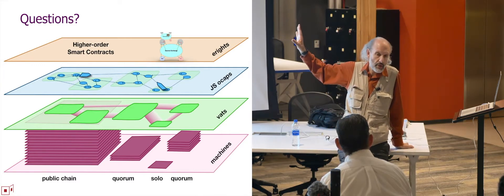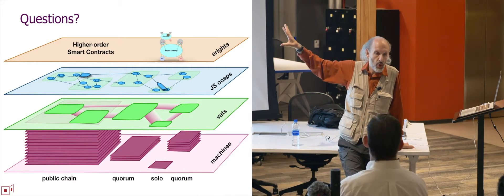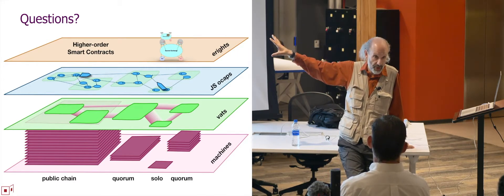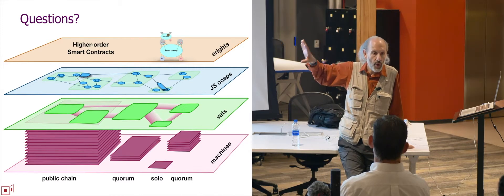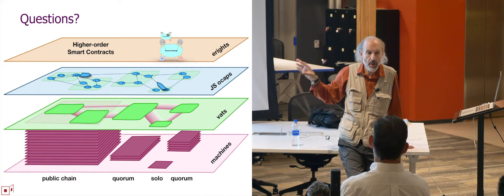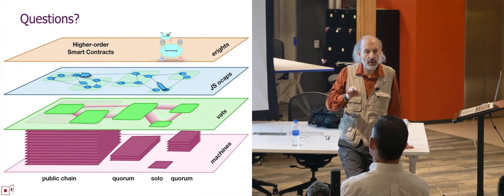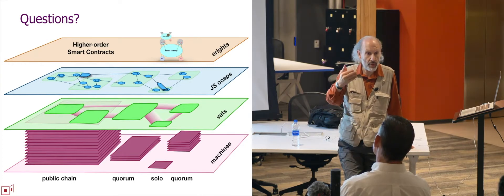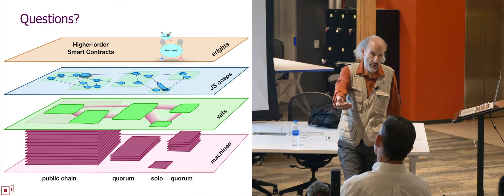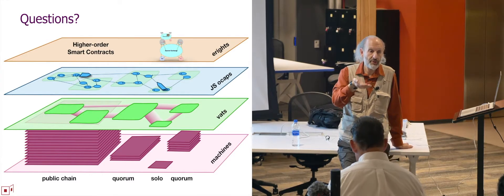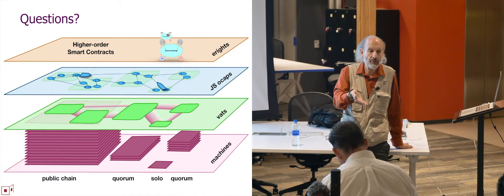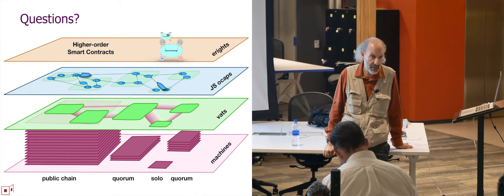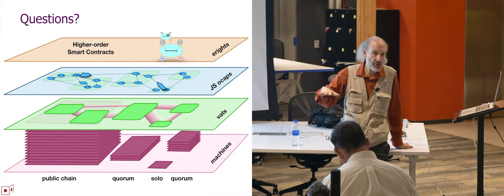The important thing about our formal methods work is we've been able to analyze these contracts and show that they're correct, that they do the job we specified, and that they compose with other contracts that we don't need to describe beyond the assumption that they are constrained by object capability rules. The constraint by object capability rules means that you don't have to reason about their code or their behavior — you have to reason about the fact that the limit on their behavior is the capabilities they've been granted, because object references are the only means by which an object gets to cause effects on the world outside of itself. That's why we're able to do such deep composition with confidence.